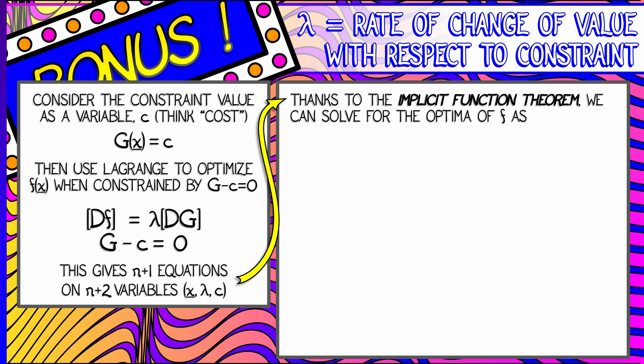Thanks to the implicit function theorem, we can solve for the optima of f as a function of c locally. Go back, review your implicit function theorem. This is the kind of thing that it's good for. We can't solve for it explicitly. We solve for it implicitly. We can say that those critical points are at a location x that depends locally only on c.